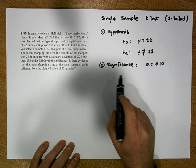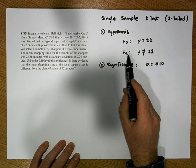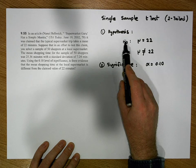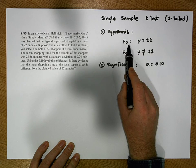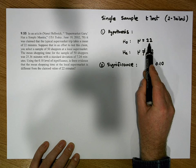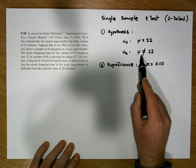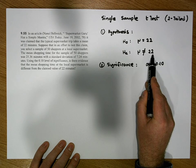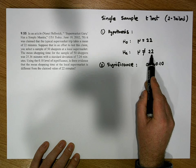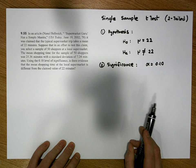We need to keep in mind that this is going to be a two-tailed test, because to prove the null position incorrect, all we need to show is that the mean shopping time is less than 22 minutes or greater than 22 minutes. So this is a two-tailed test.